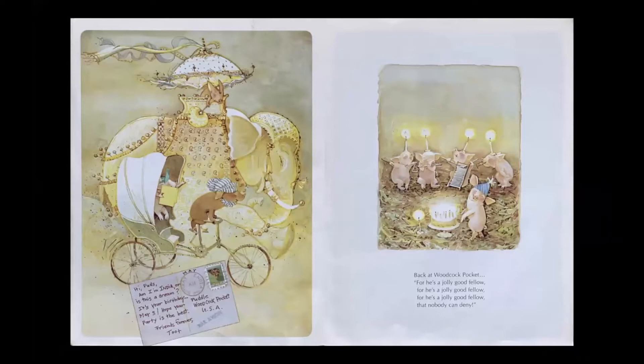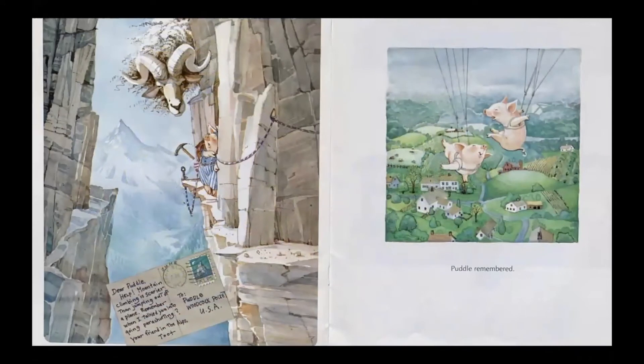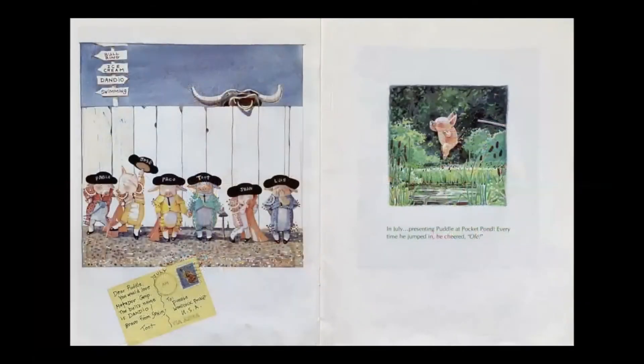Back at Woodcock Pocket. For he's a jolly good fellow, for he's a jolly good fellow, for he's a jolly good fellow that nobody can deny. Dear Puddle, help! Mountain climbing is scarier than jumping out of a plane. Remember when I talked you into going parachuting? Your friend in the Alps, Toot. Puddle remembered. Dear Puddle, you would love Matador Camp. The bull's name is Dandio. Bravo from Spain. Toot.